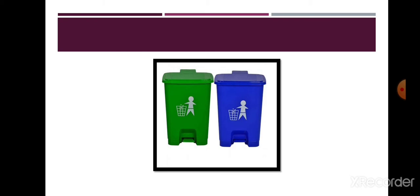To manage biodegradable and non-biodegradable waste, first of all we need to have two different kinds of dustbins. You must have seen these at your home also. Keep one green dustbin and one blue dustbin. In the green dustbin you put the biodegradable waste, and in the blue one you put the non-biodegradable waste. This makes segregation between these two materials easy, so that we can manage them properly.